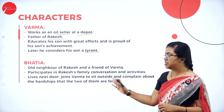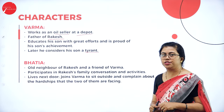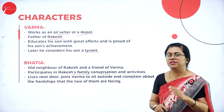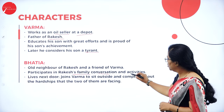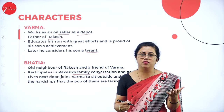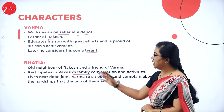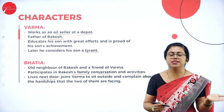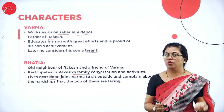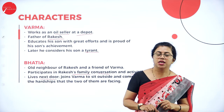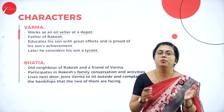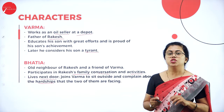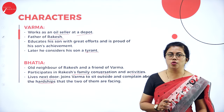Mr. Bhatia is an old neighbor of Rakesh and a companion of Mr. Varma. He participates in Rakesh's family conversations and activities — someone very close to the family. He used to live next door and joins Varma to sit outside in the evenings, have conversations, and complain about Rakesh's treatment of his father and how badly Varma felt he was being treated.